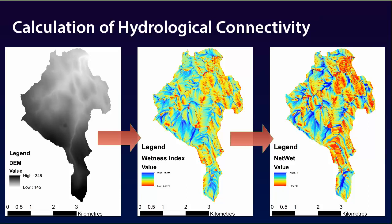This calculation is based on two steps. Firstly, the predicted pattern of soil moisture is calculated using the topographic wetness index. And second, the hydrological connectivity predictions are made using the network index.